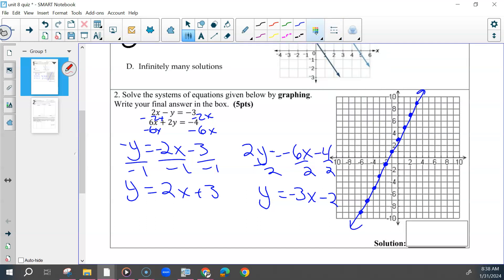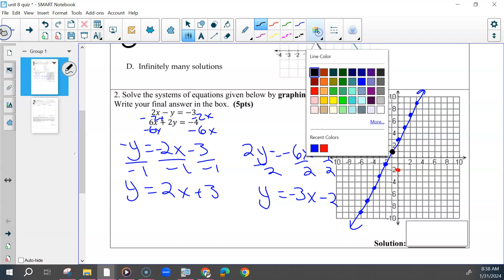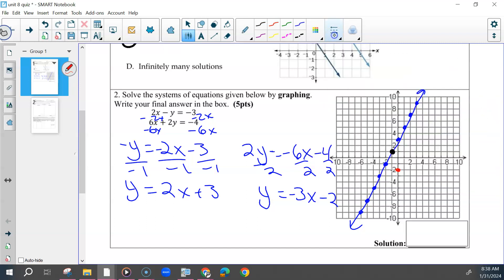The other one would have started at negative 2, had a negative slope going up 3 to the left one as many times as possible. And then you should have looked to see where do those two lines cross. This would have been at negative 1, 1.